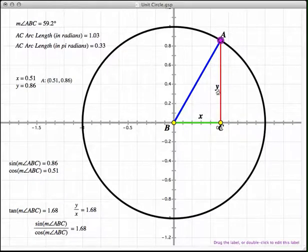So that's sine. X, right here at 0.51, represents the cosine of that angle measurement, which here is 59.2.